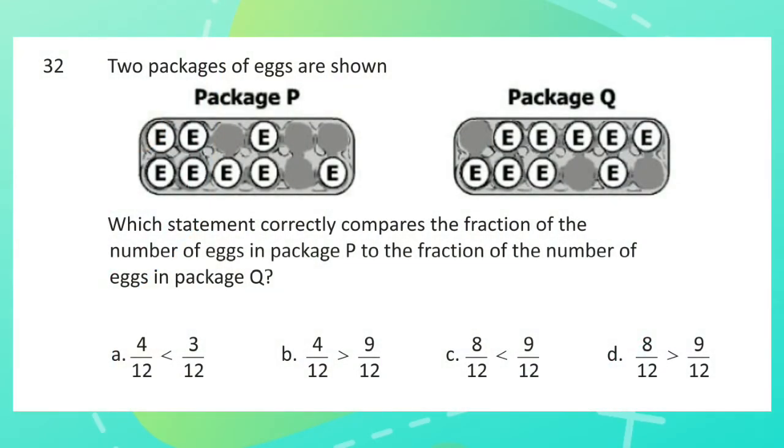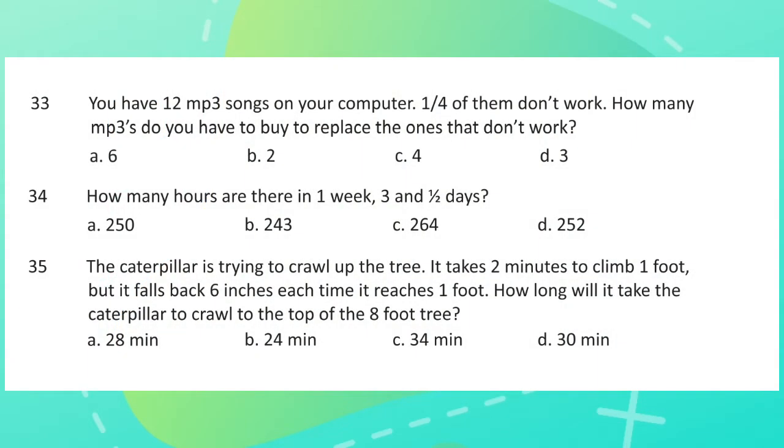Question 32: Two packages of eggs are shown. Which statement correctly compares the fraction of the number of eggs in package P to the fraction of the number of eggs in package Q? Question 33: You have 12 MP3 songs on your computer. One-fourth of them don't work. How many MP3s do you have to buy to replace the ones that don't work?